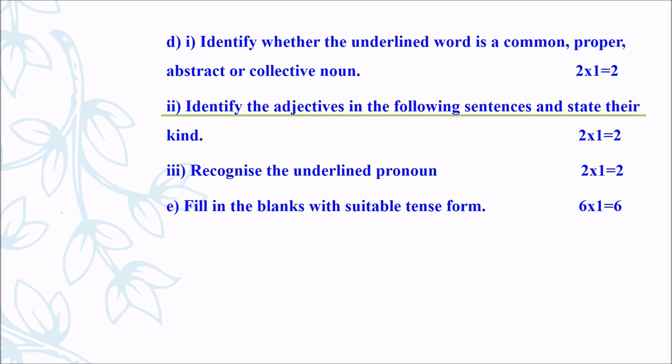Next one is Identify the adjectives in the following sentences and state their kind — you will get 2 questions, each carrying 1 mark, so totally 2 marks. Next one is Recognize the underlined pronoun — you will get 2 questions, each carrying 1 mark. Next one is Fill in the blanks with suitable tense form — you will get 6 questions, each carrying 1 mark, so totally 6 marks for tenses.